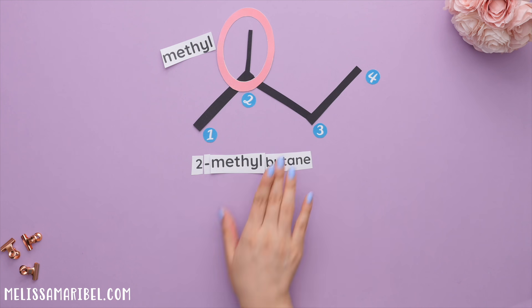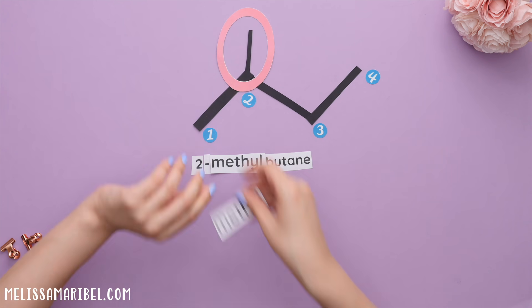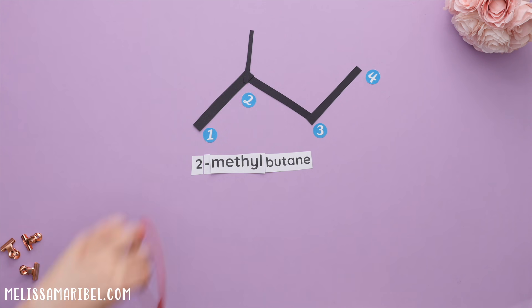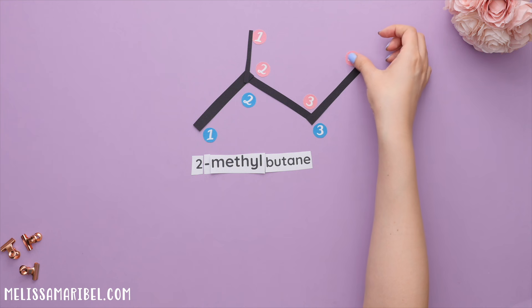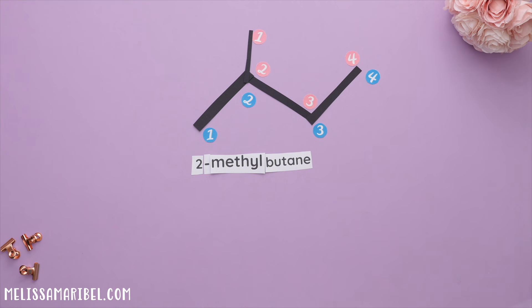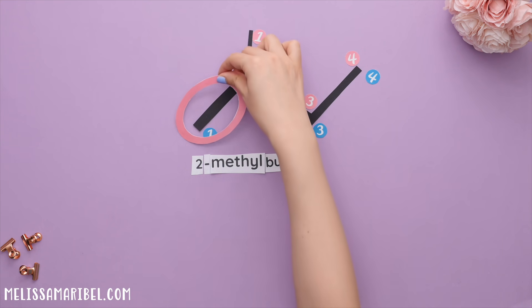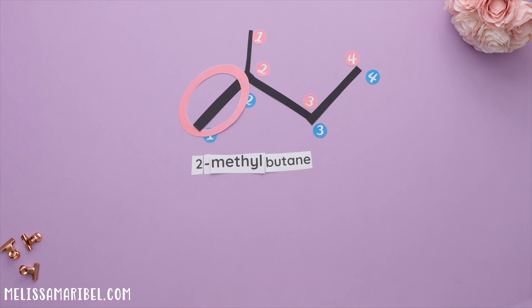We could have numbered this differently by starting at the other end — one, two, three, four — and it would have given us the same exact answer since the methyl group is still at two.